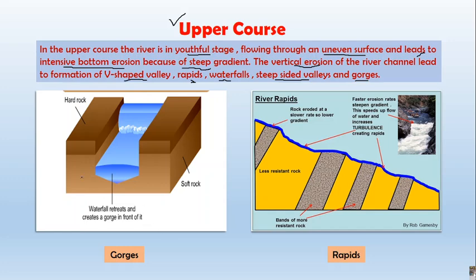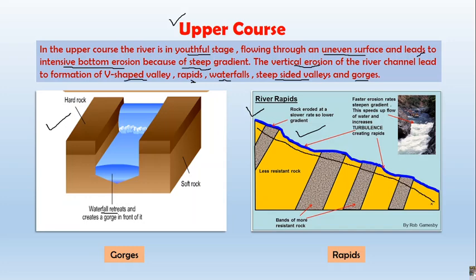A gorge is mainly created due to intensive vertical erosion or due to waterfall retreat. The shape of a gorge is like the English alphabet I. Rapids are that part of the river course in the mountain where the river flows with great velocity through a steep slope, underlaid by alternate layers of less resistant rock (soft rock) and more resistant rock (hard rock).